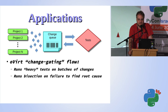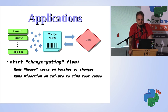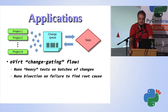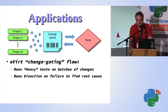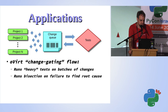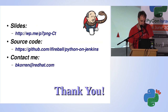Another application is what we call change gating. You have a big flow of changes coming in from all kinds of oVirt projects at once, and you want to run complicated tests — system tests that run with Lago — but you can't run that kind of test for each and every change because you don't have enough resources and it's not fast enough. So we run them in batches, and if something fails you do a bisection to find the exact change that made it fail. You need data structures for queuing changes and doing the bisection — and that's very natural and easy to write in Python.